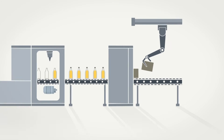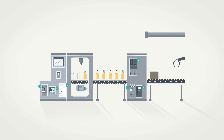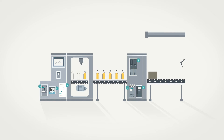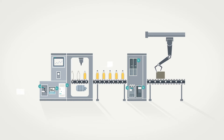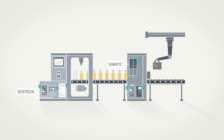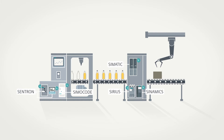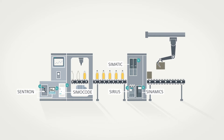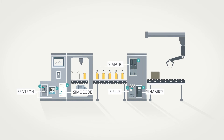You do this by using measuring components that are integrated directly in production and automation. Siemens offers innovative meters and measuring automation products for this purpose. They can be used to capture all electrical energy flows within a system.